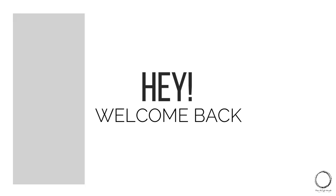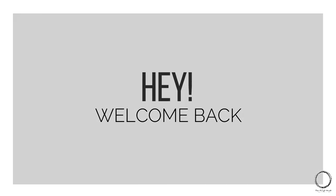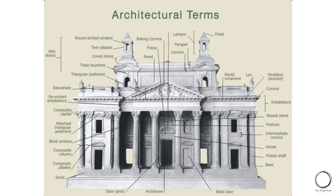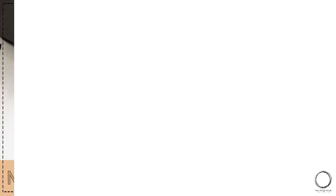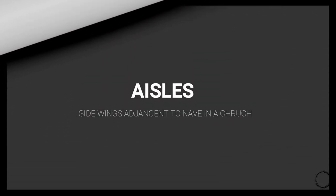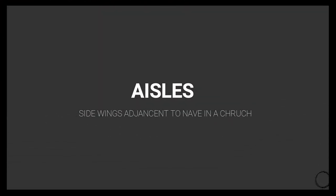Hi guys, welcome back. Today we will look into an important topic which had a lot of weightage of marks in NATA 2021 attempt one paper — that is architectural terms and their meanings, which we have covered in our last video linked above. Starting with the first term: aisles, which means side wings adjacent to the nave in a church.